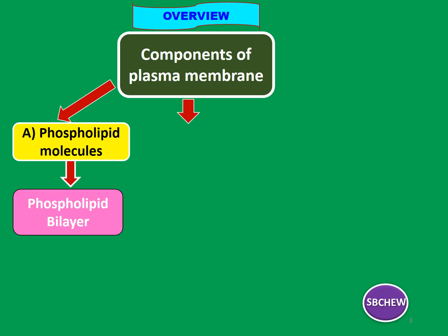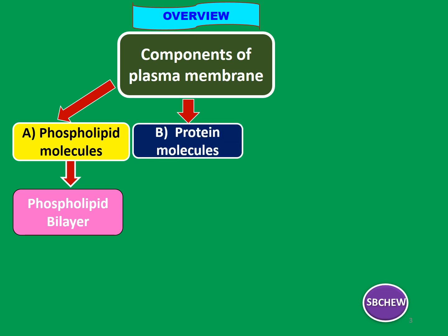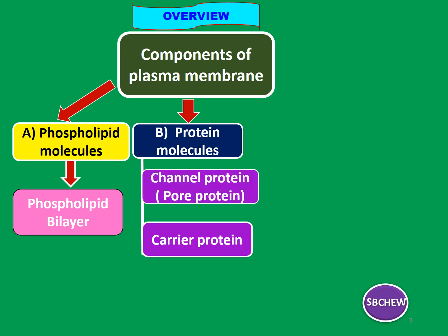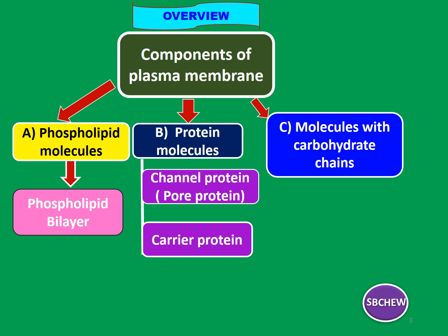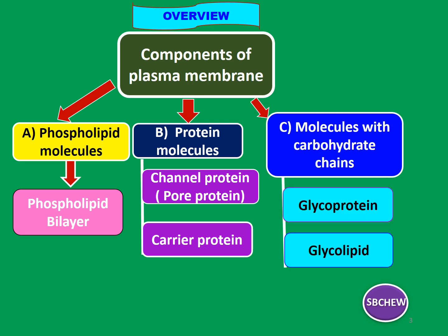Next, we are going to discuss the three other components of the plasma membrane: the protein molecules, including channel proteins and carrier proteins. We are also going to learn about molecules with carbohydrate chains, such as glycoproteins and glycolipids. Lastly, we will discuss the molecule called cholesterol.